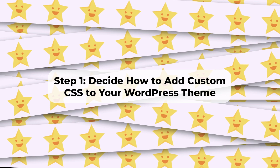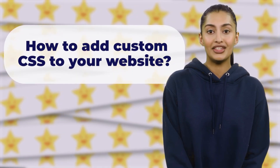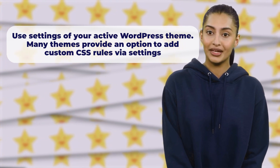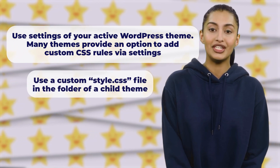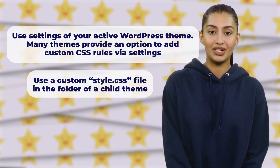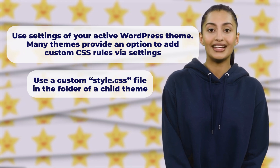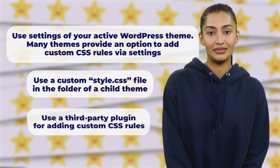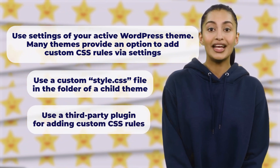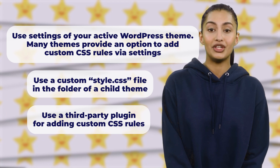Step 1: Decide how to add custom CSS to your WordPress theme. The first approach is to use settings of your active WordPress theme — many themes provide an option to add custom CSS rules via settings. The second approach is to use a custom style.css file in the folder of a child theme. You can read more about child themes in the official WordPress documentation; a link is provided in the description below. The third approach is to use a third-party plugin for adding custom CSS rules. There are many free plugins in the official WordPress catalog — you just need to pick one.